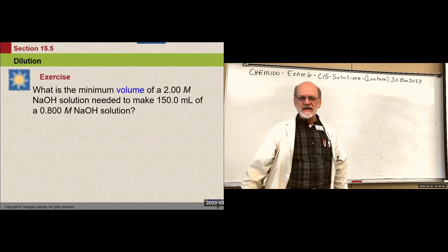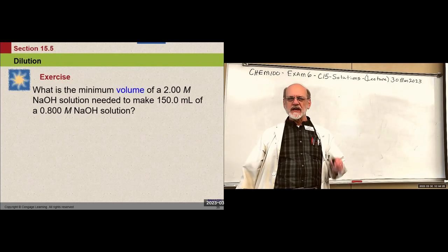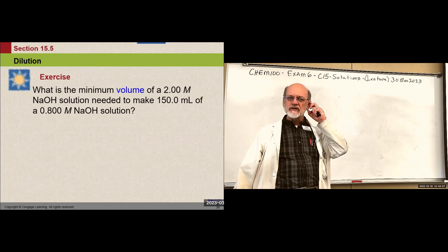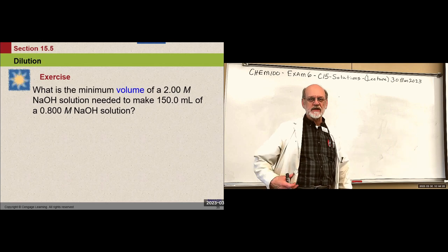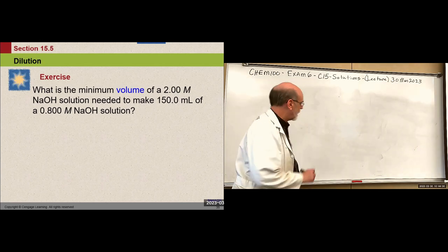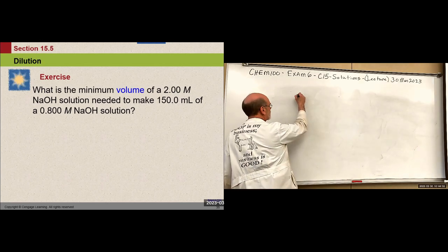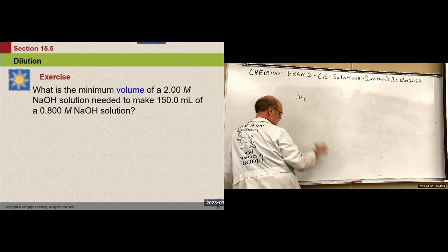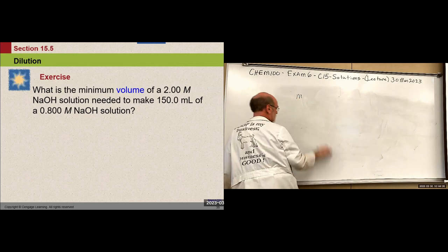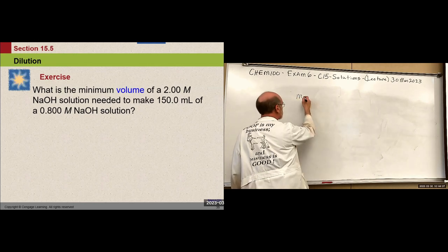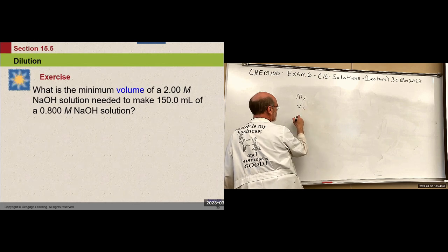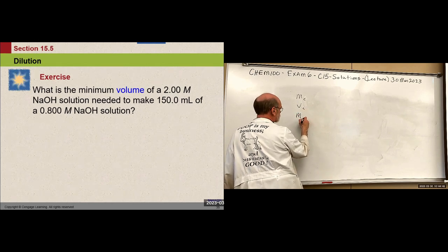What's the minimum volume of 2 molar sodium hydroxide solution needed to make 150 milliliters of 0.8 molar sodium hydroxide solution? Here's my table: the concentrated molarity, the dilute molarity, the concentrated volume — unknown — and the dilute volume.